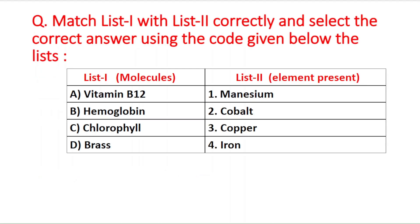Next question: match list one (molecules) with list two (elements). The molecules are vitamin B12, hemoglobin, chlorophyll, and brass. The correct pair is vitamin B12 paired with cobalt. Vitamin B12's chemical name is cyanocobalamin, and cobalt is the element present in it.